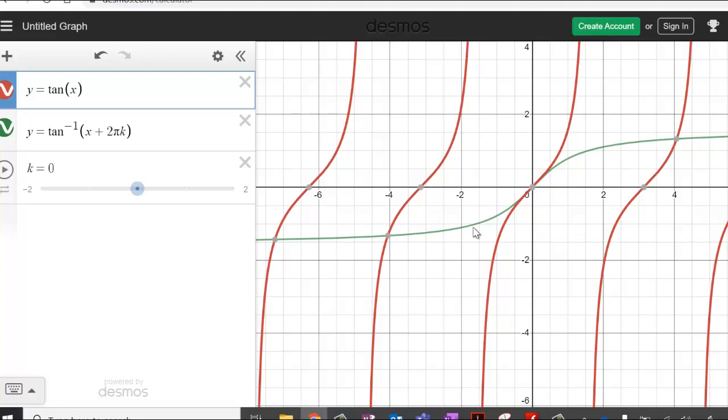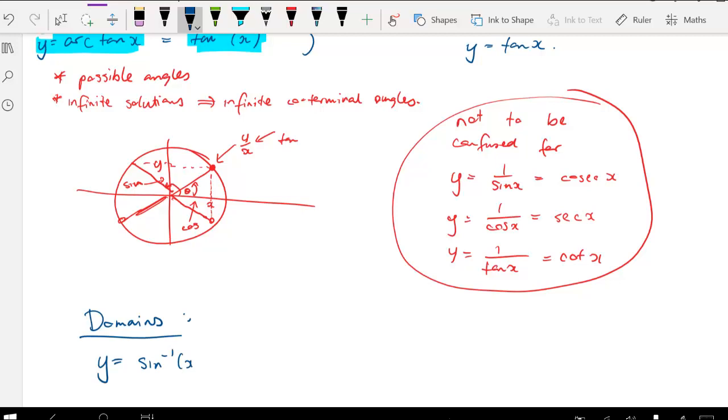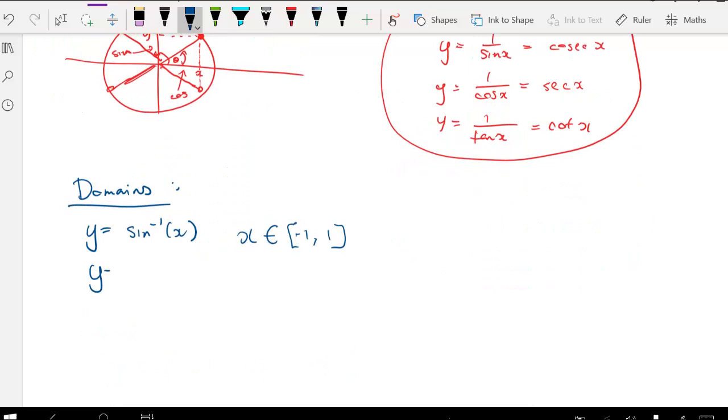So hopefully you can see that these functions can be defined by a given domain. Looking at y equals arc sine, we've got x as an element that's restricted between negative 1 and 1. And we have arc cos that's restricted between negative 1 and 1. And we have arc tan where x is an element of the set of real numbers.